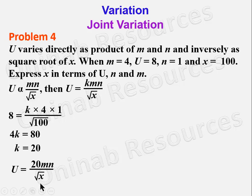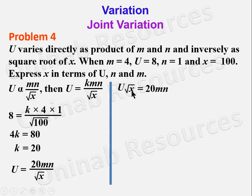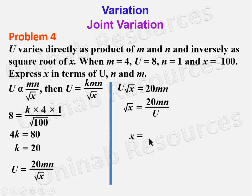To make x the subject: cross-multiply to get u√x = 20mn. Dividing both sides by u: √x = 20mn/u. Squaring both sides: x = 400m²n²/u². That is the end of the solution to problem 4.